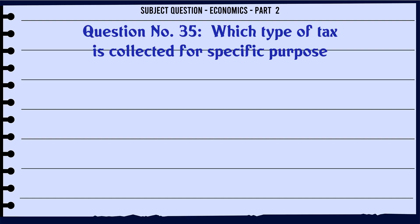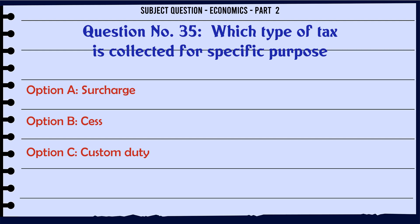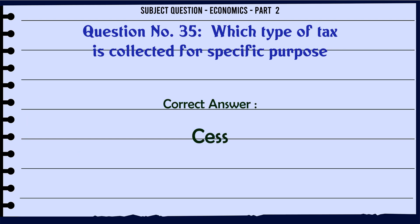Which type of tax is collected for a specific purpose? A. Surcharge. B. SIS. C. Custom duty. D. Excise duty. The correct answer is: SIS.